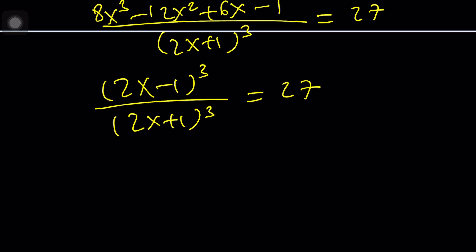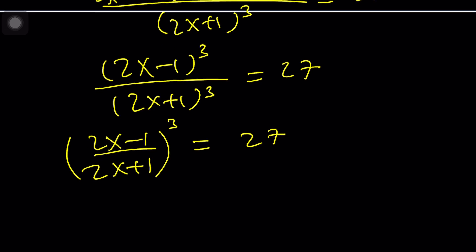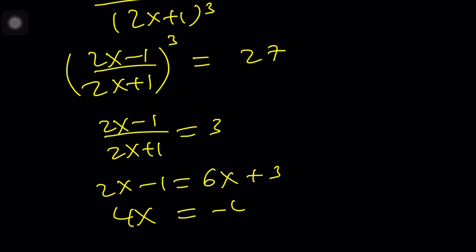From here, we can cube root both sides. And that should give us a 3. If you cross multiply, we'll get the following. Put this on both sides. You'll get x equals negative 1 as before. And that's basically pretty much it.